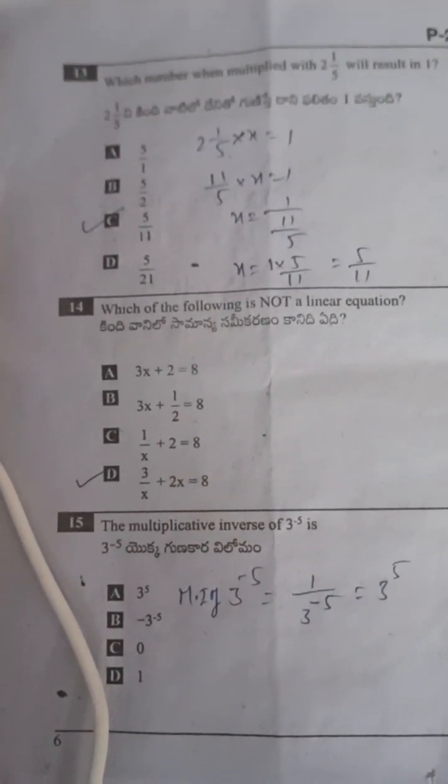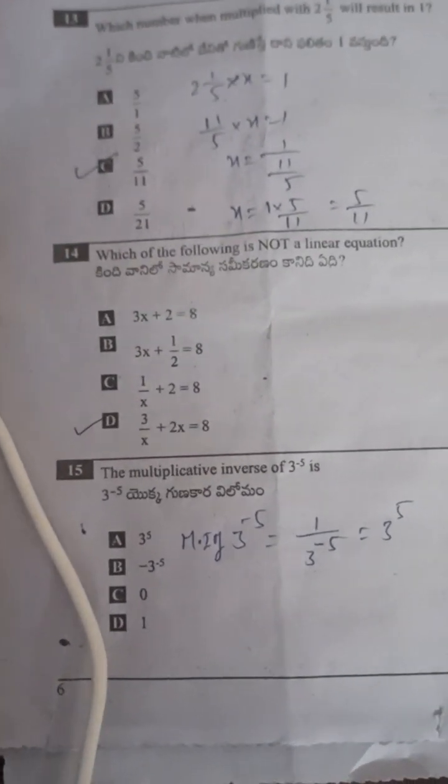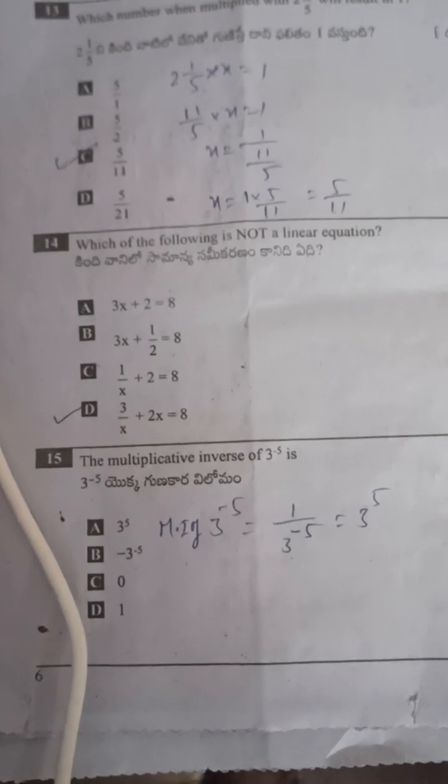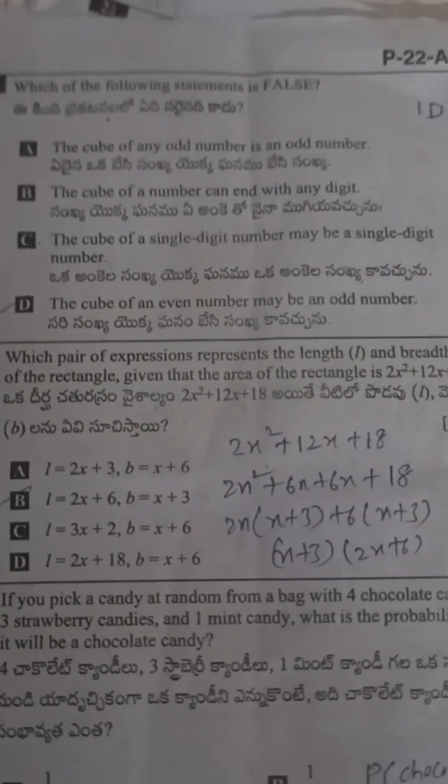Next, fourteenth question: which of the following is not a linear equation? Option D is not a linear equation. Next: the multiplicative inverse of 3 power minus 5 is 3 power 5.